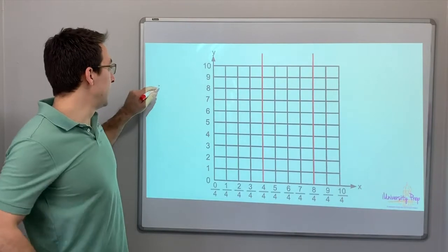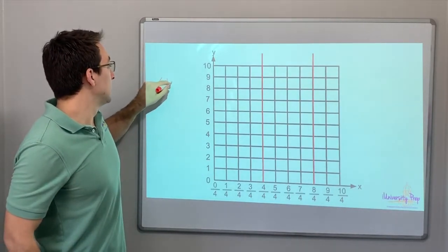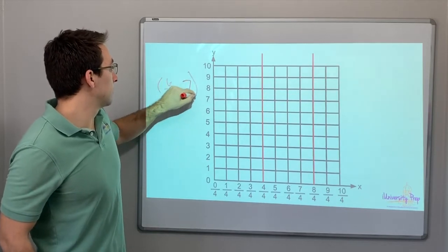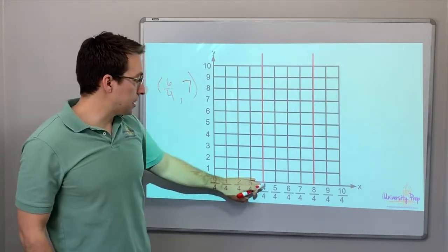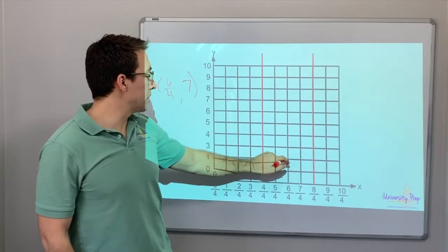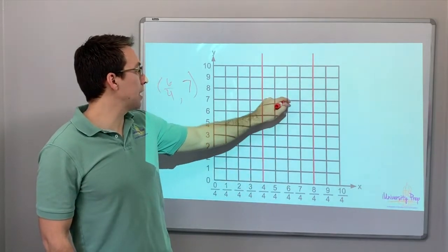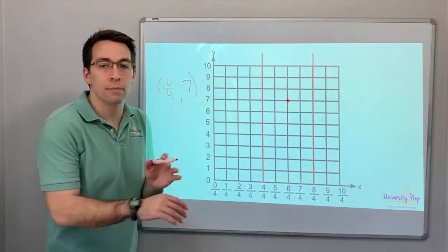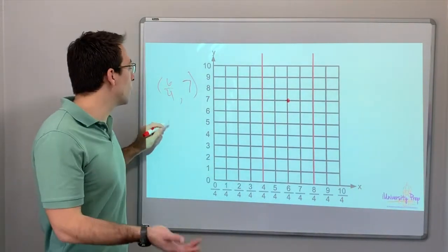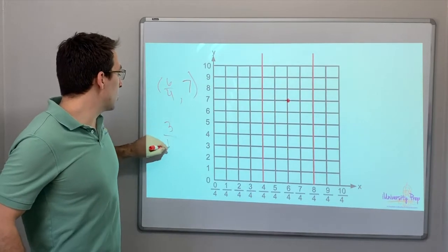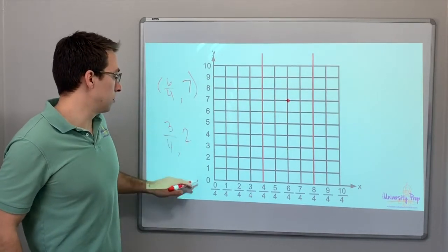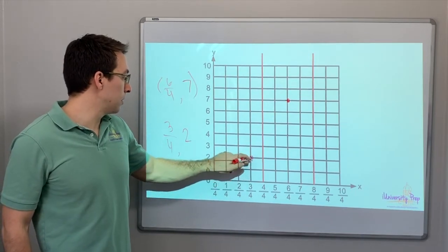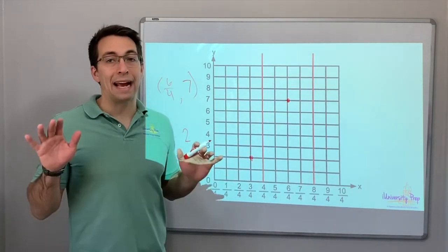All right. So let's say you get a question that says 6 quarters, 7. Well, that's fine. You go over to 6 quarters, and then you come 1, 2, 3, 4, 5, 6, 7. No problem. If you see fractions or decimals on the coordinate plane, don't worry about it. It is okay. 3 quarters, 2. 1, 2, 3 quarters, 1, 2. No problem at all.